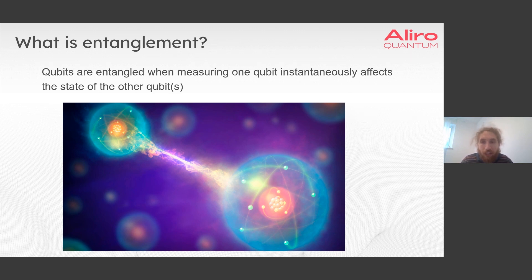While measuring one qubit will affect the state of a qubit that it is entangled to faster than light can travel between them, it is important to note that this does not mean we can use entanglement for faster than speed of light communication.